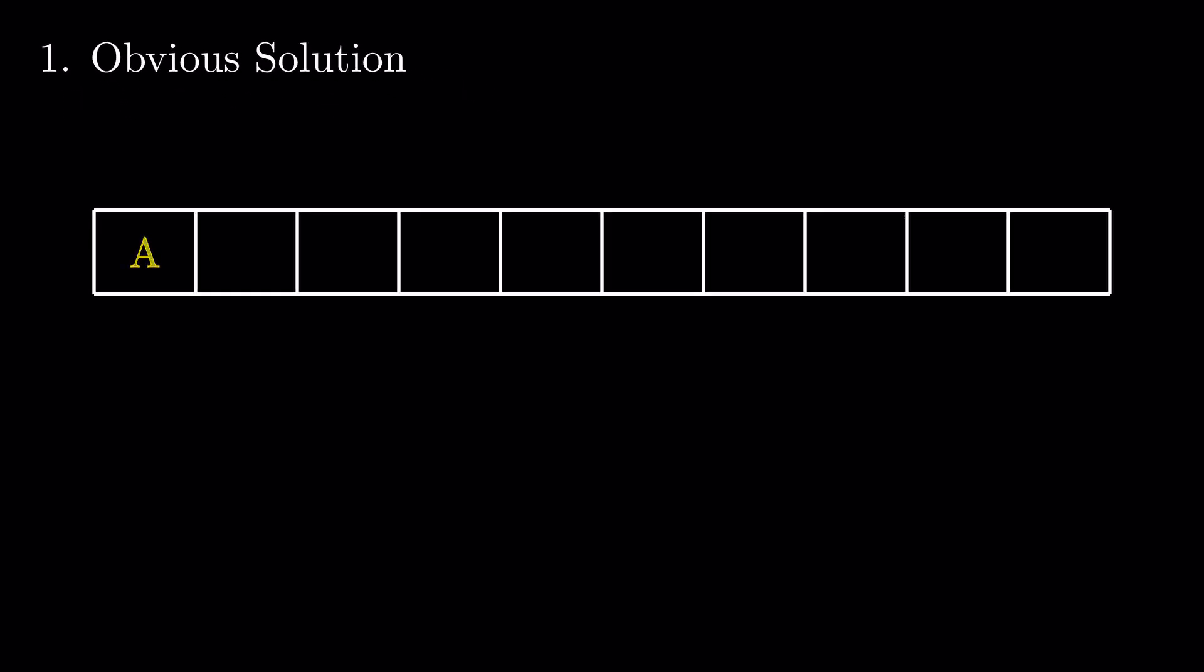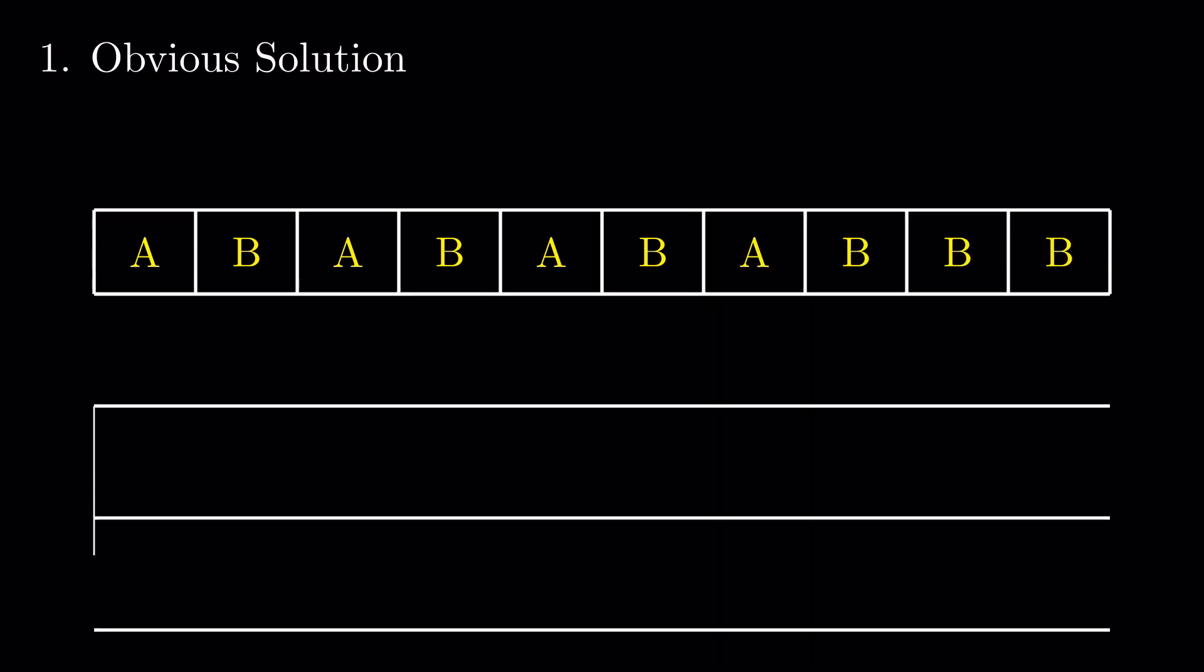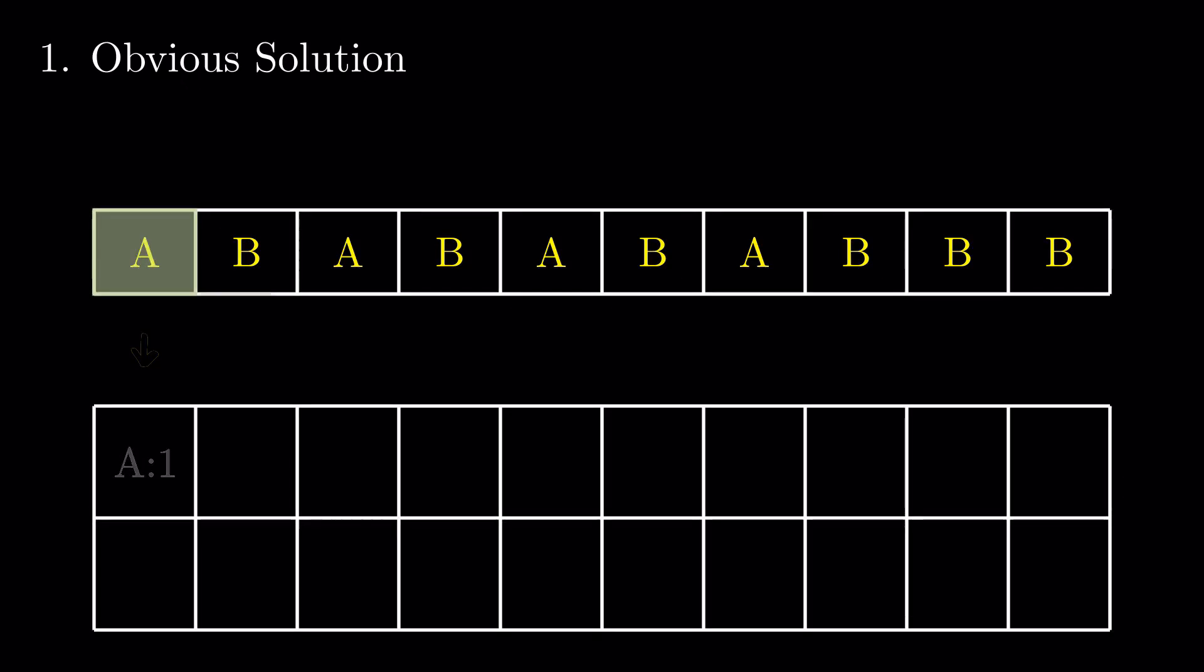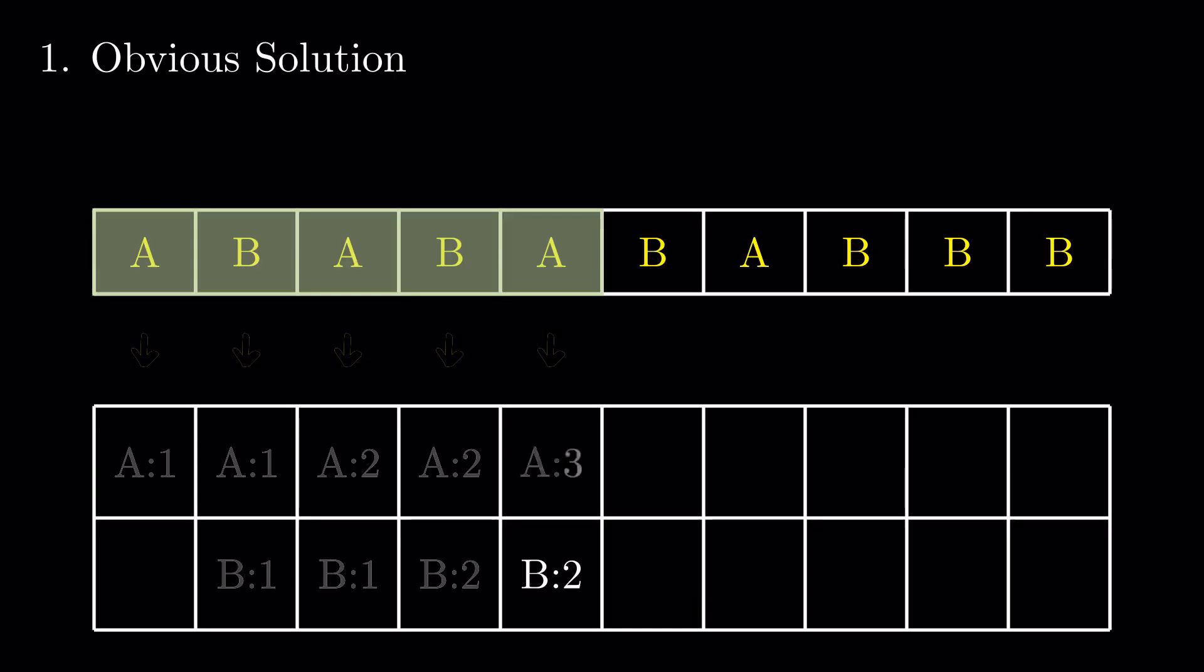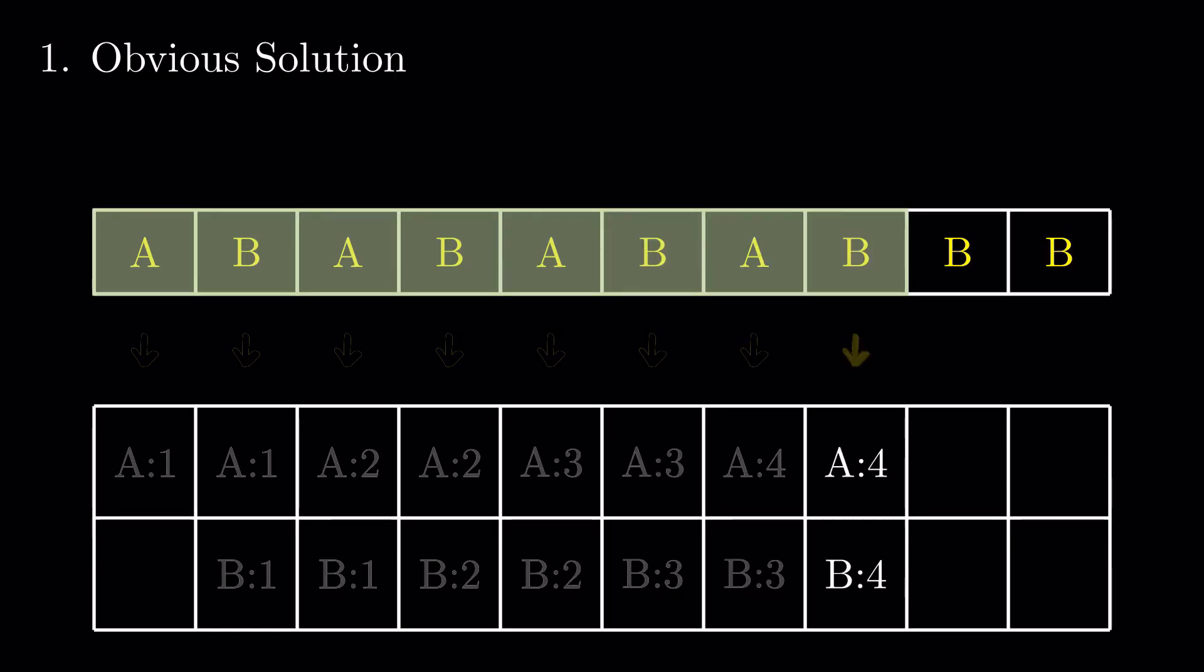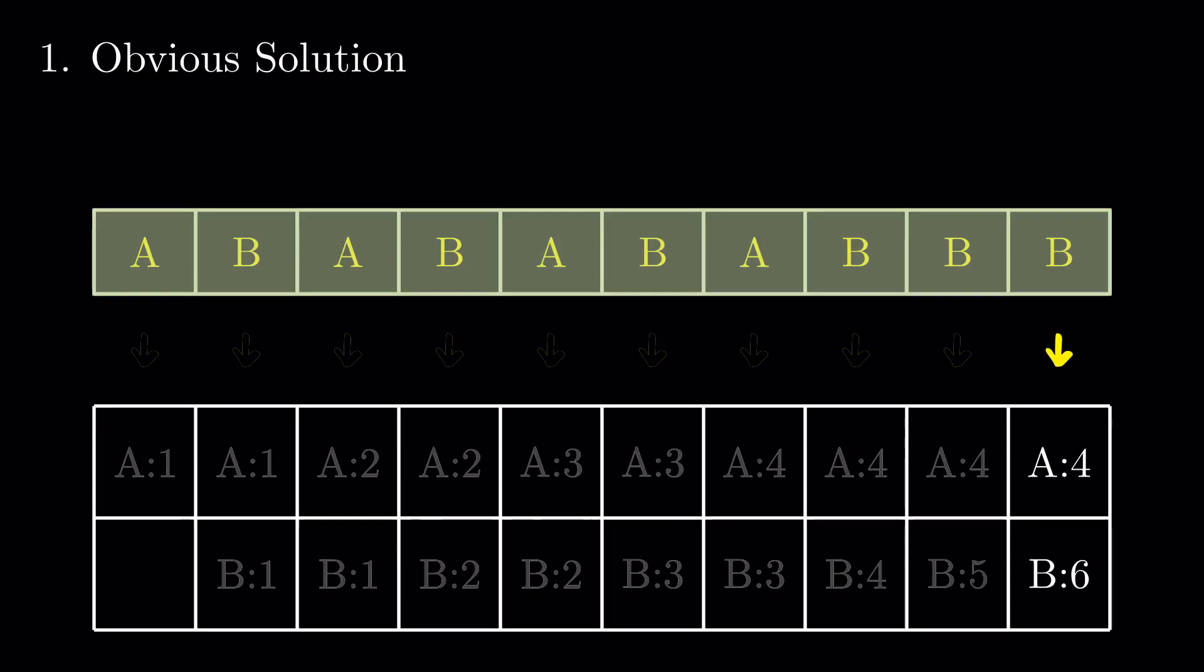One obvious algorithm scans the vector in one pass, keeping a running tally of the occurrences for each distinct element encountered. If the number of distinct elements is fixed, for example 2, this algorithm will have a time complexity of big O of n and a memory complexity of big O of 1.